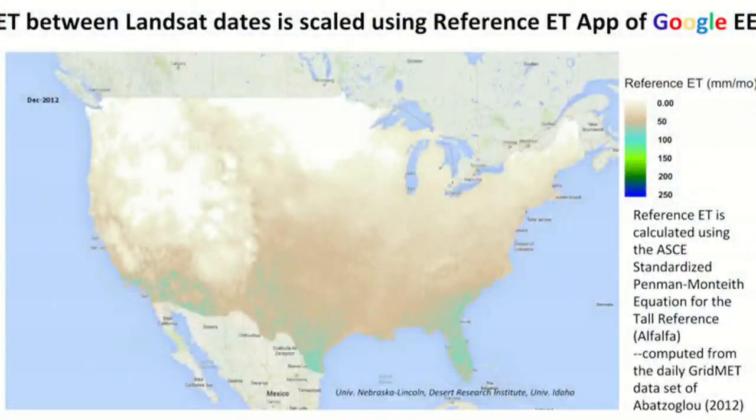Data is more refined for CONUS, but EFLUX is running at the global scale for the entire globe. This is a reference ET calculated from gridMET for 2012. We do have an app — the reference ET app using this gridMET data — which allows you to estimate reference ET. It follows the ASCE Penman-Monteith standard at either hourly or daily time steps.